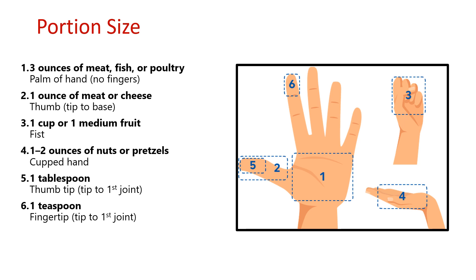Another method is having portion sizes of food. Three ounces of meat, fish, or poultry is about a palm of hand. One ounce of meat or cheese is the size of a thumb tip to base. One cup or one medium fruit is the size of a fist. One to two ounces of nuts or pretzels is one cupped hand. One tablespoon means one thumb tip, and one teaspoon means one fingertip.